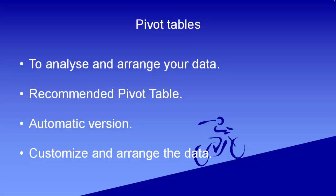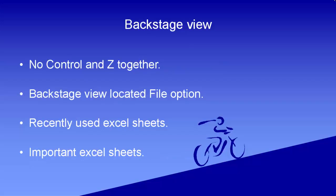Right after selecting the data and headings you want, simply click on recommended pivot tables. You can further customize and arrange the data on the dialog box that appears after applying the recommended pivot table.